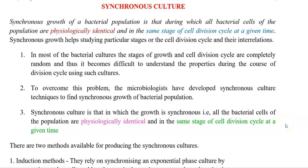In this screencast video lecture, we are going to see about synchronous culture. It refers to growth of the bacterial population happening in such a way that bacterial cells of the population are physiologically identical — that is, in the same stages of cell division cycle at any given time. Thus synchronous culture or synchronous growth helps in studying particular stages of cell division cycles and their interrelationship.